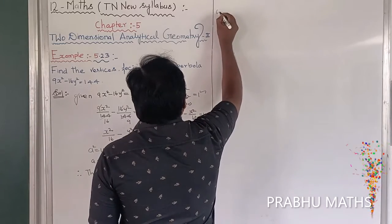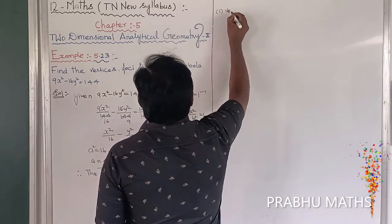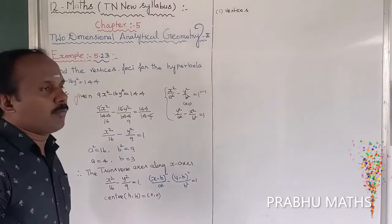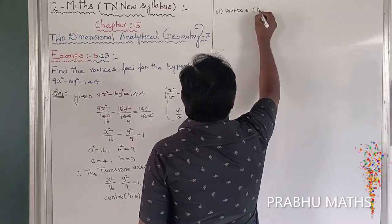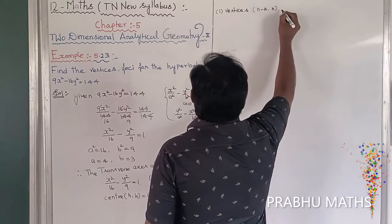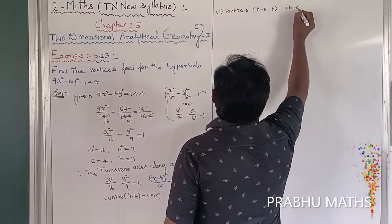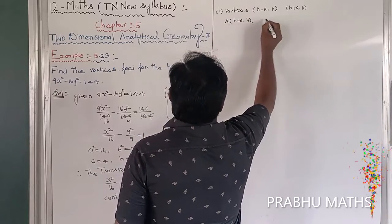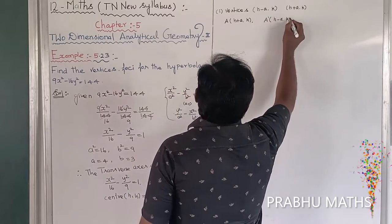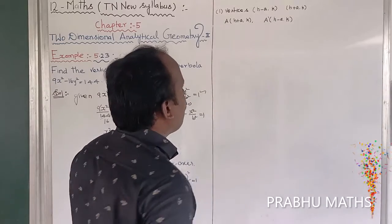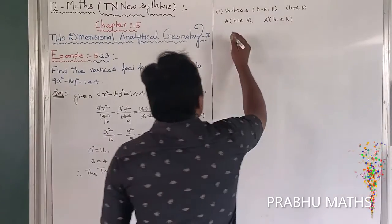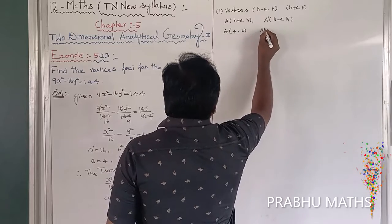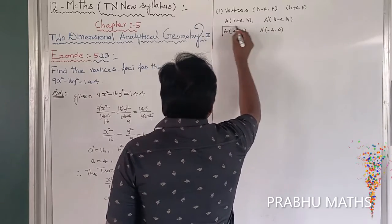Next, to find the vertices. Along the x-axis, the transverse axis vertices formula is (h plus a, k) and (h minus a, k). Since h equals 0, k equals 0, and a equals 4, the vertices are (4, 0) and (−4, 0).